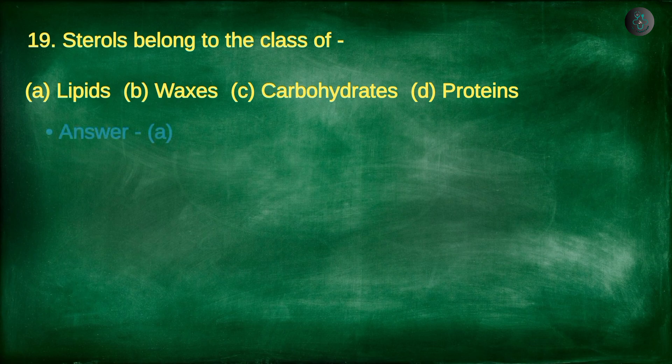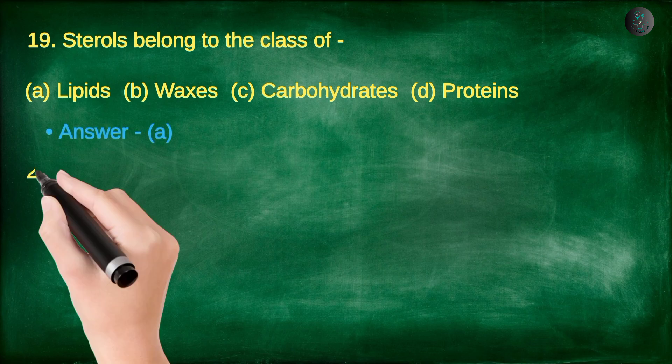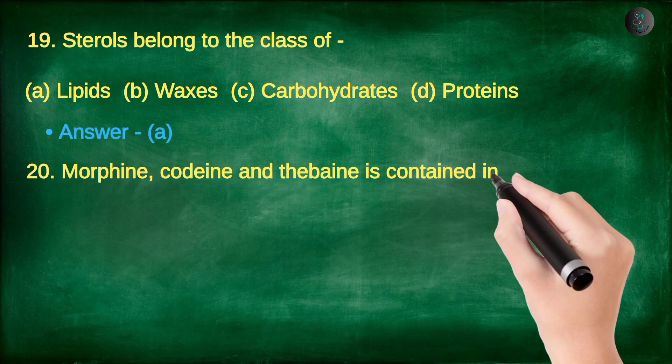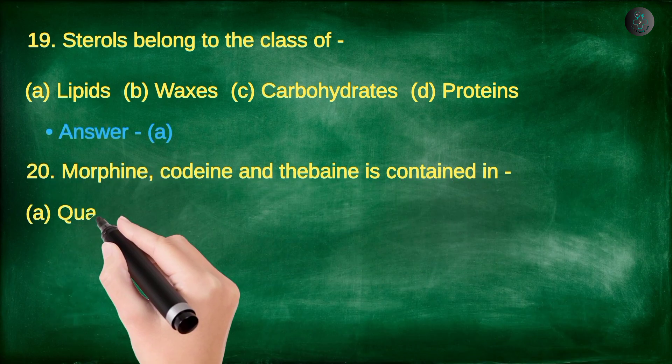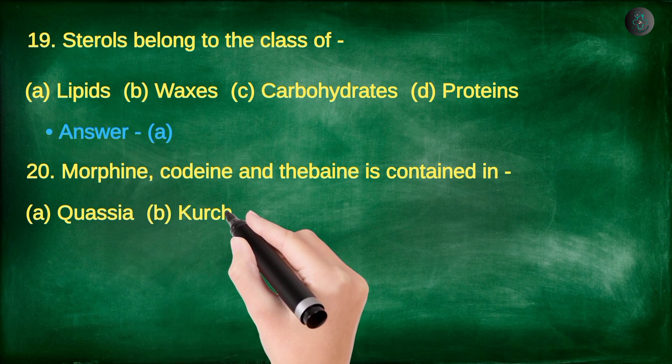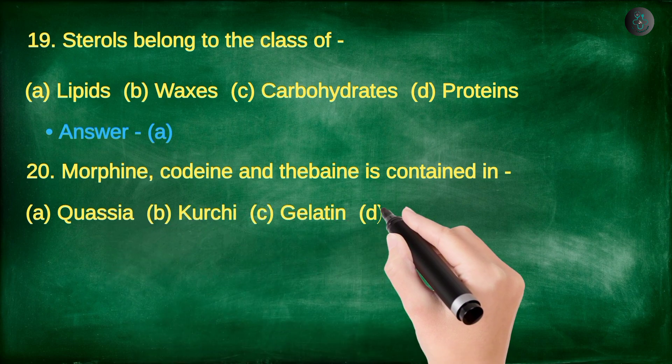Next question. Morphine, codeine, and thebaine are contained in: A. Quassia, B. Kurchi, C. Gelatin, D. Opium.